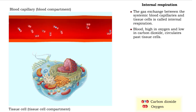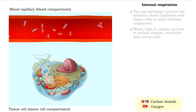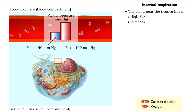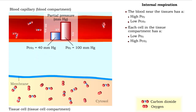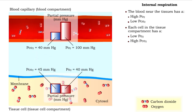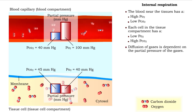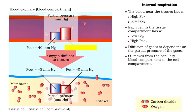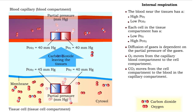The gas exchange between the systemic blood capillaries and tissue cells is called internal respiration. Blood high in oxygen and low in carbon dioxide circulates past tissue cells. The blood near the tissues has a high oxygen partial pressure and low carbon dioxide partial pressure. Compared to the blood entering the tissues, partial pressure of oxygen is low and carbon dioxide is high in the tissue compartment. Diffusion of gases is dependent on the partial pressure of the gases, so oxygen moves out of the blood and into the cells, while carbon dioxide moves out of the tissue compartment into the blood and is carried away.